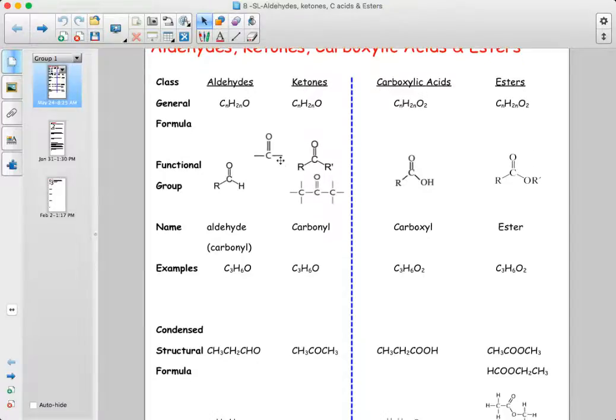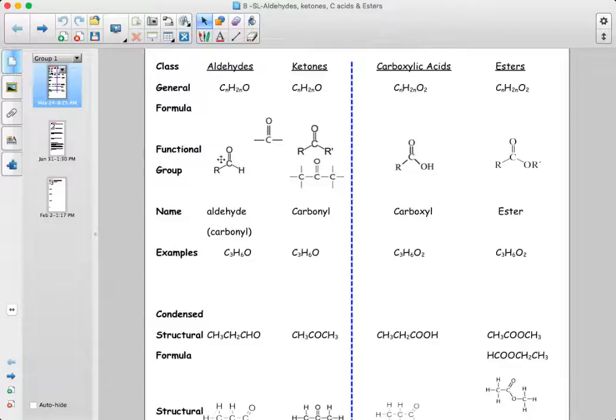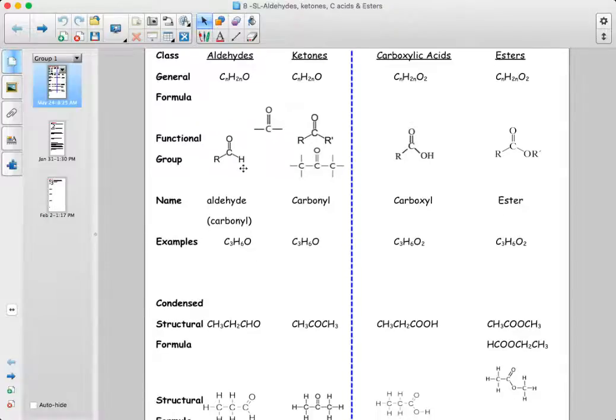So let's go through them. Again, they all have a C to O double bond, and that alone can be called a carbonyl group. So if you're naming the functional group alone, you would call it a carbonyl.